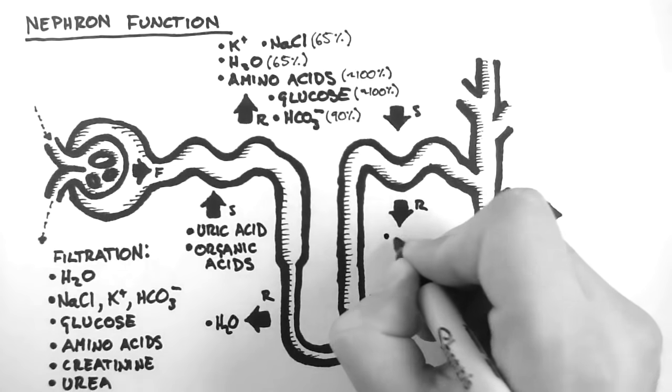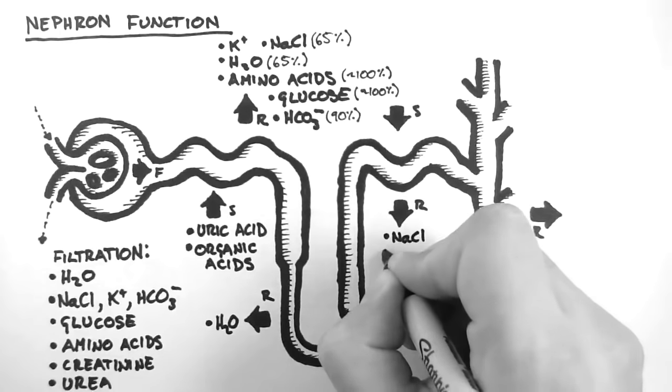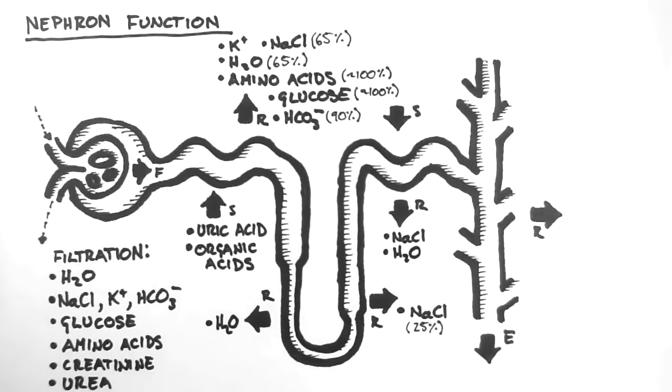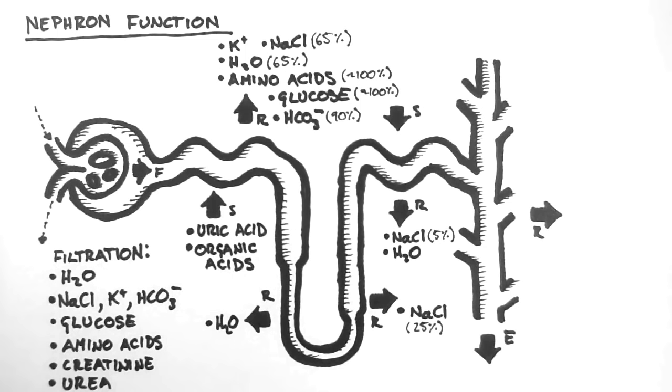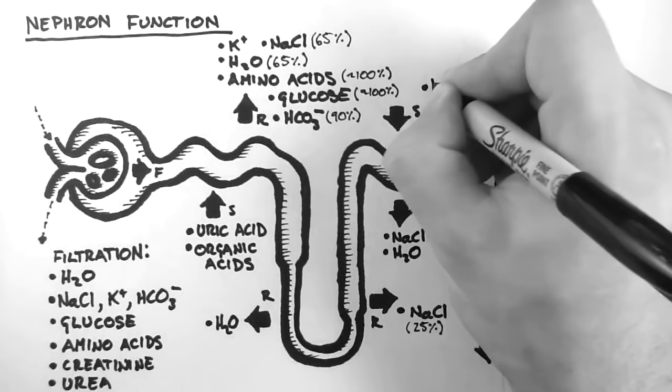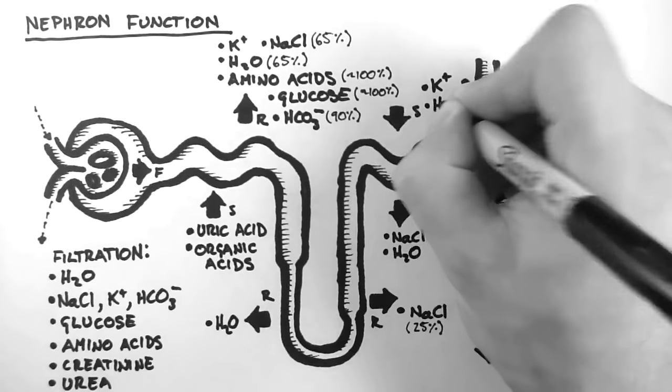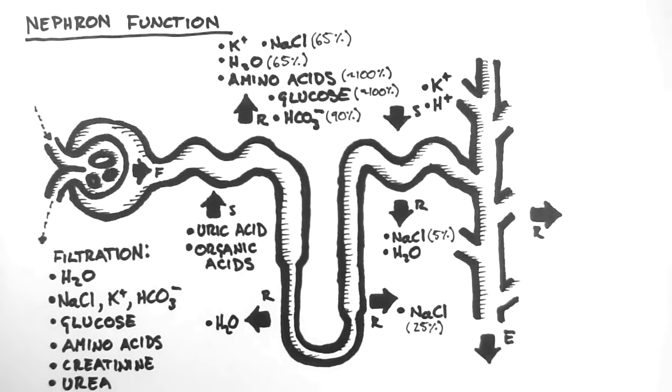In the distal convoluted tubule, we reabsorb about 5% of the filtered sodium chloride, and some water. So you can see that the main way the nephron reabsorbs water is by movement of sodium chloride, which the water follows due to the osmotic gradient. In the distal tubule, some potassium and some hydrogen ions are secreted. This means moved back into the nephron.